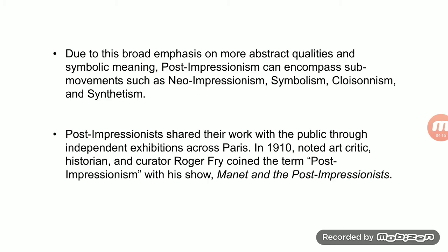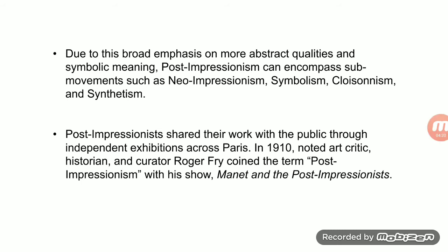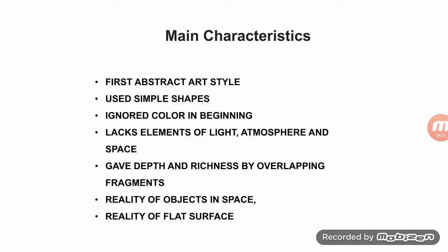Post-Impressionism had a broad emphasis on abstract qualities and symbolic meaning, encompassing sub-movements such as Neo-Classicism, Symbolism, and Cloisonnism. The first characteristic of Cubism's art style used simple shapes, ignored color in the beginning, lacked light, atmosphere, and space, and gave depth and richness by overlapping fragments — presenting the reality of objects in space on a flat surface.